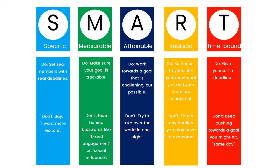3. Goals have to be attainable. When you identify your goal and determine how you're going to achieve it, you see how attainable it is and how much effort it will require. 4. Must be realistic. Your goal should represent an objective toward which you are willing and able to work. 5. Have to be time-bound. All goals should be kept within a well-detailed time frame.